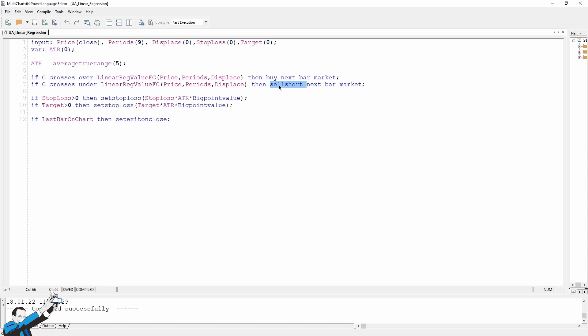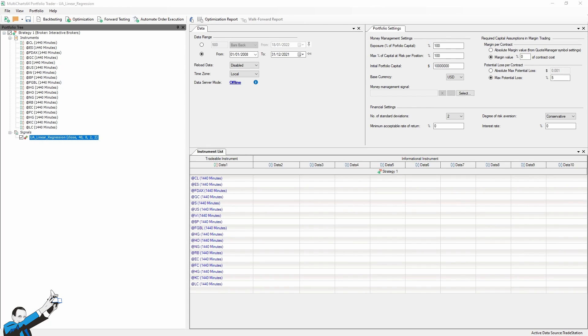As said, the stop loss is calculated on the ATR because we're going to test this type of strategy on a very varied futures portfolio which includes very different markets. Consequently, in order to standardize in some way, the results will use a stop loss and a profit target based on the ATR. Now let's move on to the MultiCharts Portfolio Trader.